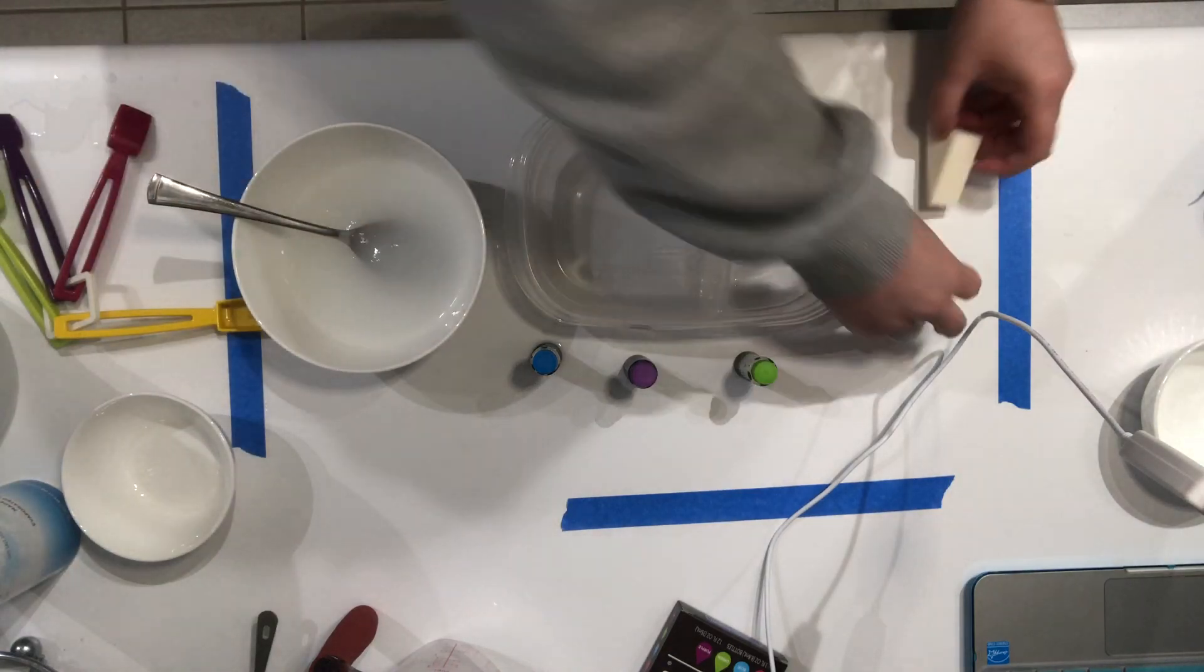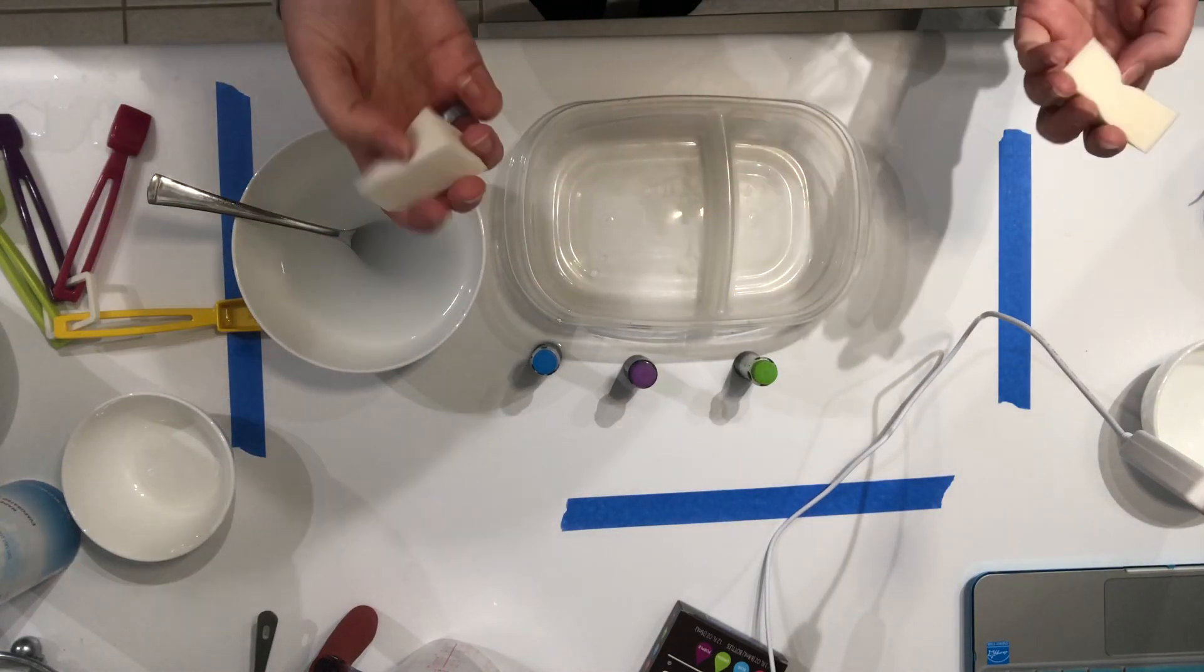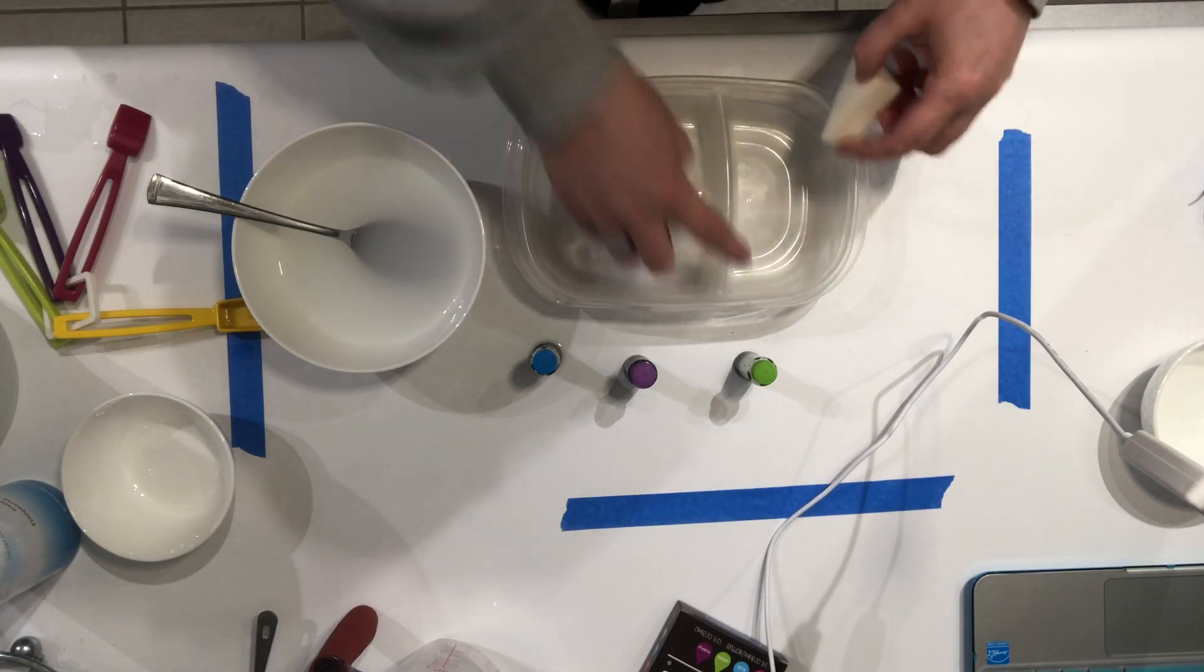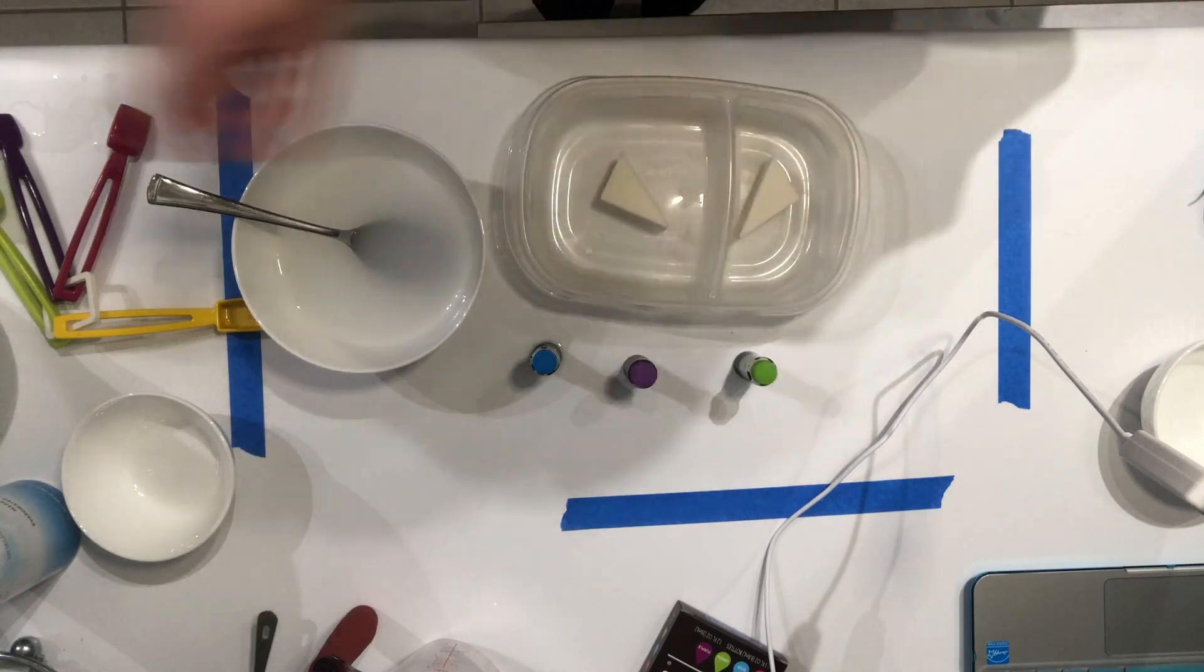And then we're going to take our two sponges. You really only need one, but I wanted to try two. And since I've got a little divider in here, I'm going to put two sponges in here.